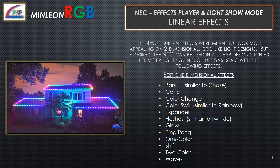Linear effects. The NEC's built-in effects were meant to look most appealing on two-dimensional grid-like light designs. But if desired, the NEC can be used in a linear design such as perimeter lighting. Linear designs work best starting with the following effects: Bars, Cane, Color Change, Color Swirl, Expander, Flashes, Glow, Ping Pong, One Color, Shift, Two Color, and Waves.